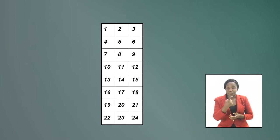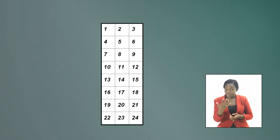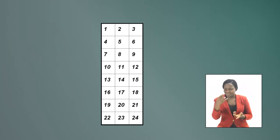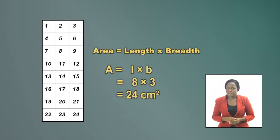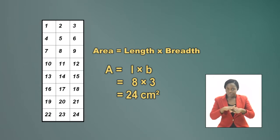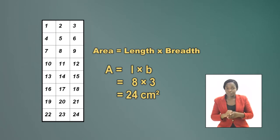Number the blocks so we can find the area of the rectangle: 1, 2, 3, 4, 5, 6, 7... There are 24. So that was easy. And applying the formula for the area of a rectangle — length times breadth — we multiply 3 times 8 and also get 24 cm squared.